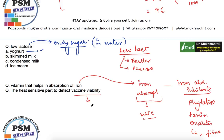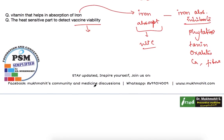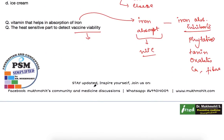The heat-sensitive part used to detect vaccine viability: this is a straightforward MCQ that has been discussed multiple times. Vaccine viability is indicated by the Vaccine Vial Monitor, which is present on most vaccines. You can refer to the immunization video on the YouTube channel for more details on vaccines.